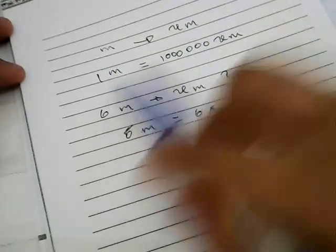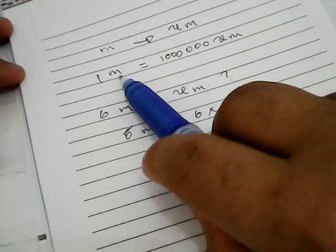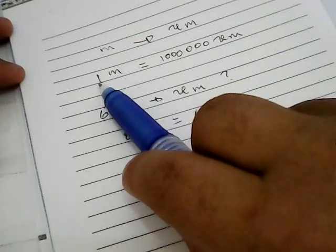Why do we have to multiply with one million? It is because we want to convert meters to micrometers.